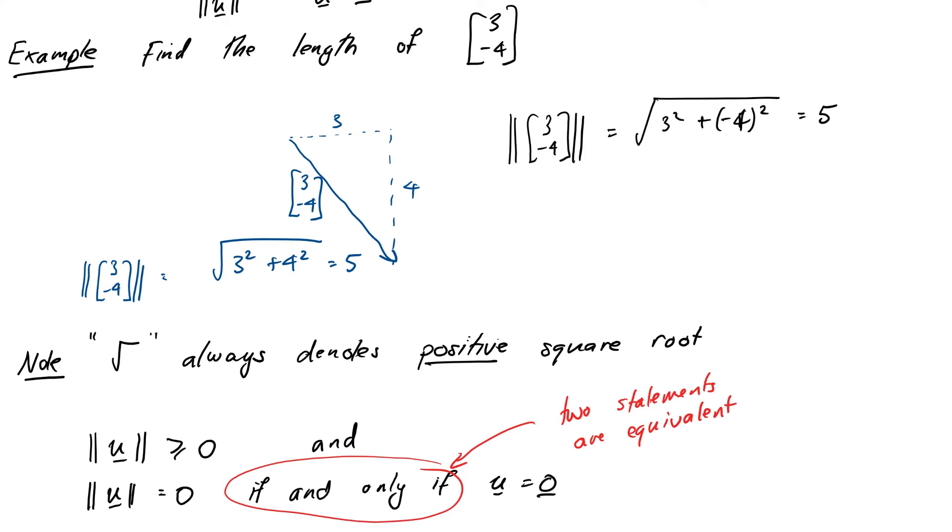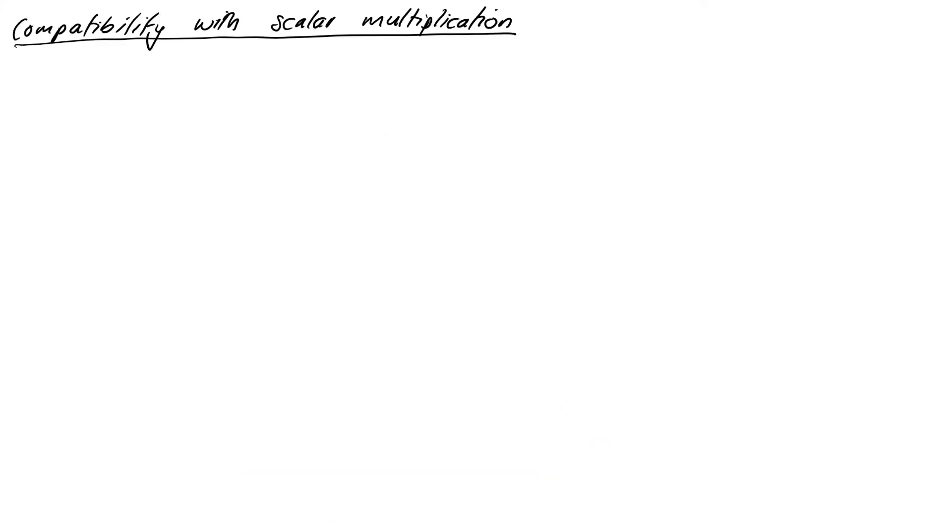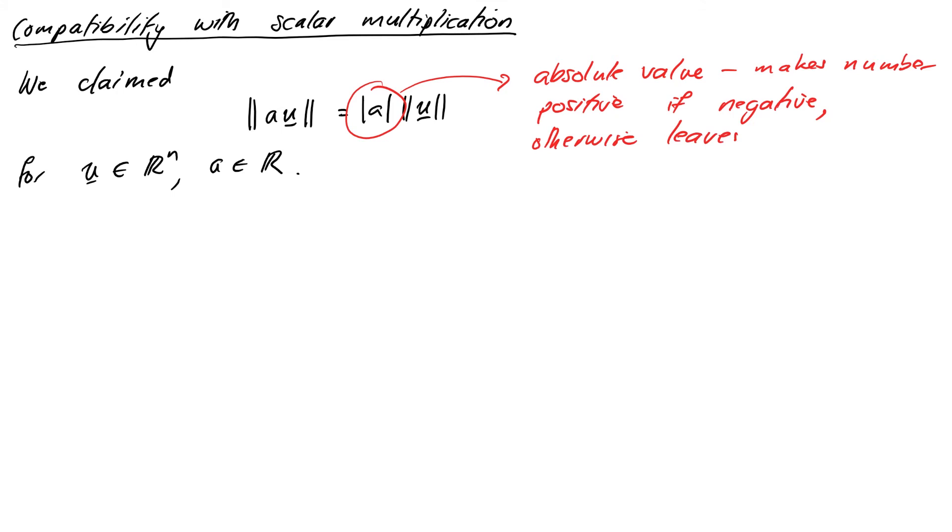So we should check that our definition of length is actually compatible with scalar multiplication because we claimed earlier that scalar multiplication ought to stretch our vectors out and reverse them if negative by the magnitude of the scalar. Okay, we've already said that before we even talked about lengths of vectors. So if we were to make that statement mathematical, we'd say that the norm of a scalar a times a vector u is equal to the absolute value of that scalar a times the norm of the vector u. This is for a vector u in R^n and a scalar a from the real numbers. The single bars denote the absolute value, which makes the number positive if it's negative, otherwise just leaves it alone.